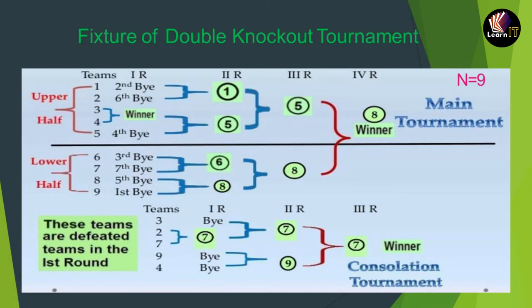In the second round, all teams will play with each other and directly advance to the semi-final and then to the final — this determines the winner. For the consolation winner bracket, all previously defeated teams — for example, teams 2, 7, 9, and 4 if team 3 is defeated — will form a new fixture. For 5 teams, total matches will be 5 minus 1 equals 4. The same bias, upper half, and lower half are calculated. There will be a first round, second round, and third round, and the winner is known as the consolation tournament winner.